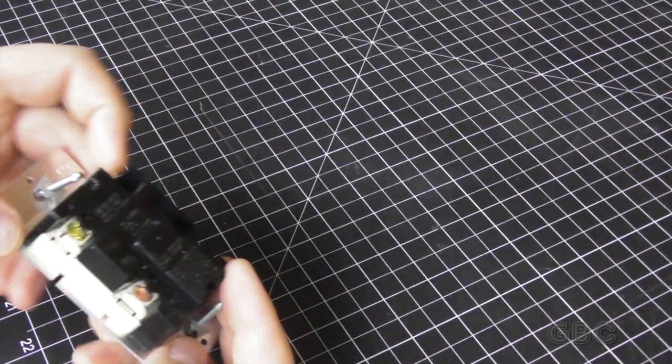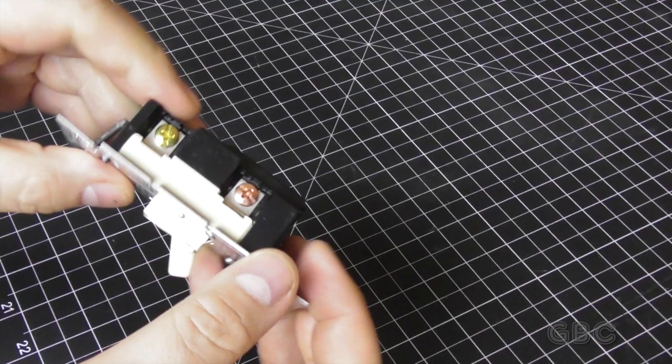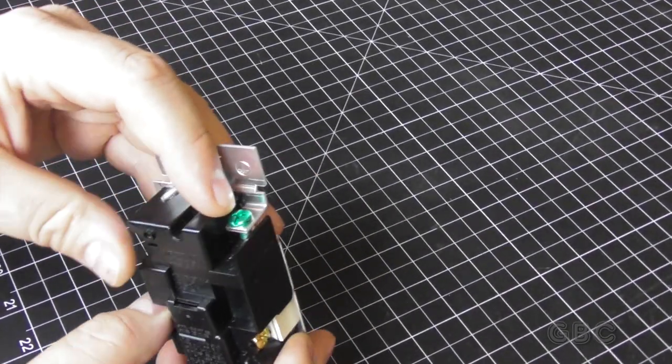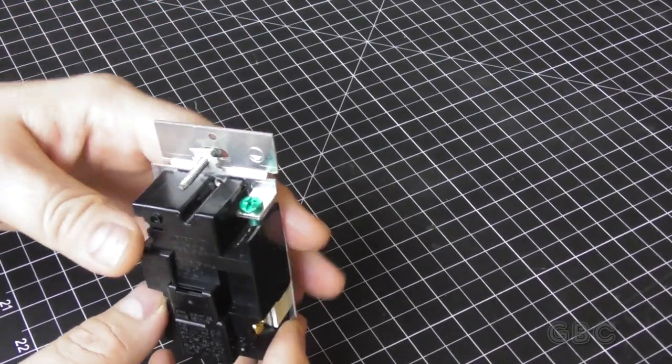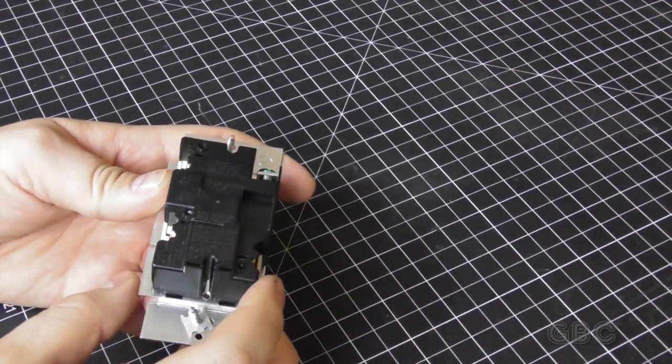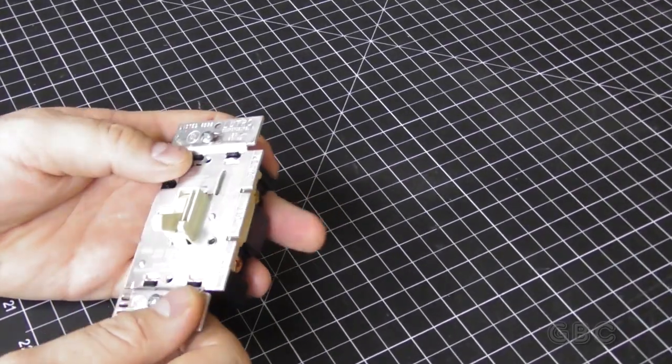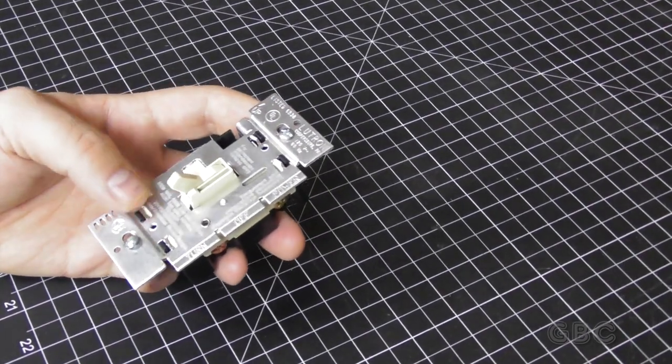So this has the screws for the load or line and then your traveler wires along with the ground screw. So let's take a look inside this thing.